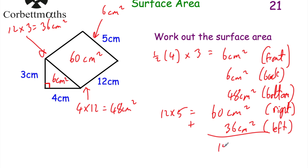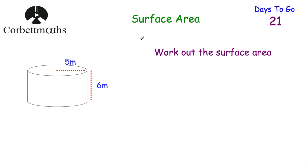Adding them all up gives us 156 centimetres squared. That's the total surface area of that triangular prism — well done if you got that.